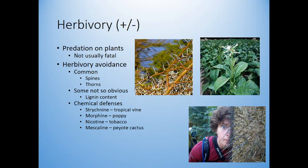Some less obvious responses to herbivory include lignin content. Lignin is the chemical that makes wood hard — a dandelion won't have it, but grass can if it grows tall enough. If you divided a field and let cows graze on one side, the re-grown grass would actually have a lot more lignin in it, causing cows to want to go elsewhere to find more luscious, green, juicy grass rather than the hard stuff.